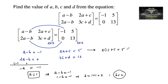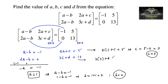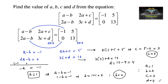Substituting a equals 1 into the third equation: 2 into 1 plus c equals 5, so c equals 5 minus 2, which is 3. Substituting c equals 3 into the last equation: 3 into 3 plus d equals 13, so d equals 13 minus 9, which is 4. Therefore, a equals 1, b equals 2, c equals 3, and d equals 4.